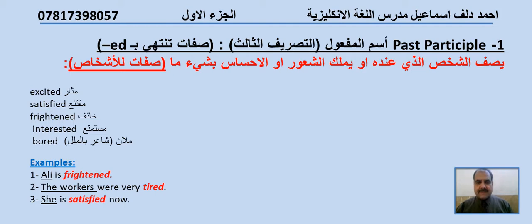Example number one: Ali is frightened. علي خائف. عندنا الفاعل علي، عاقل، والصفة frightened اسم المفعول. Number two: The workers were very tired. والصفة tired اسم المفعول. Number three: She is satisfied now. هي الآن مقتنعة. نفس السبب، الفاعل عاقل والصفة satisfied اسم المفعول.